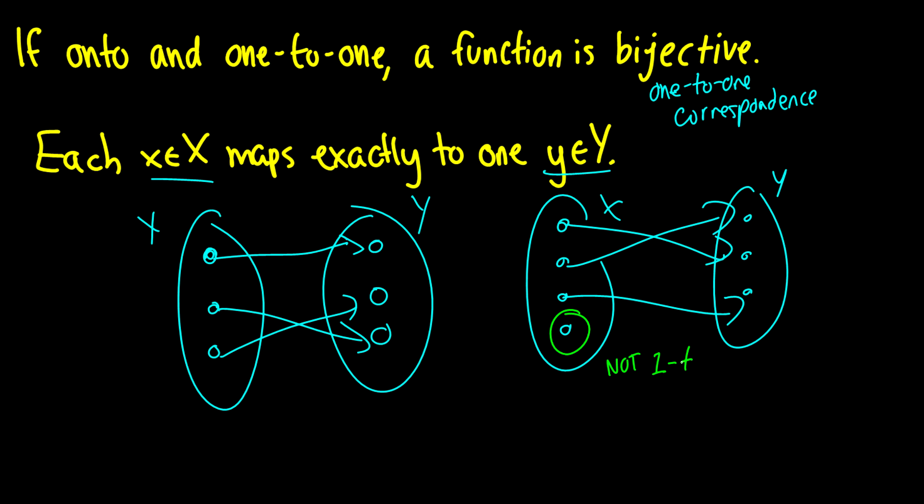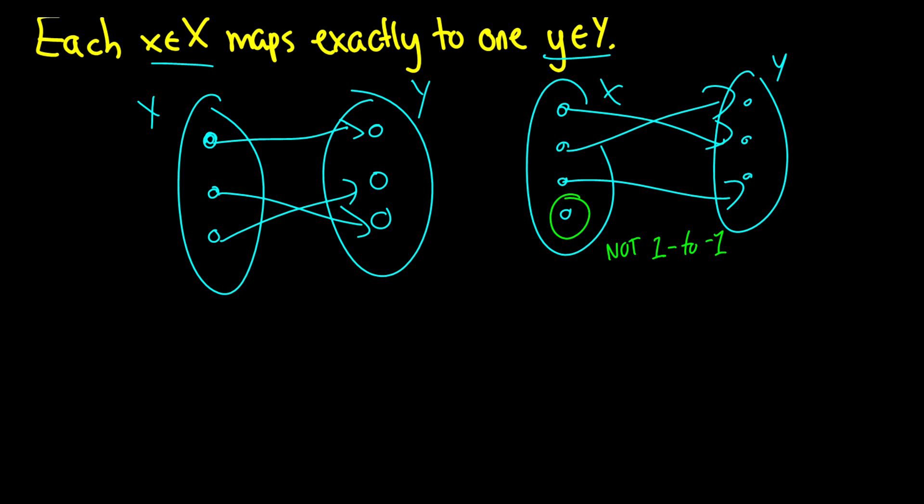What this means is, say we have four elements in x and only three elements in y, then we can't have a bijective relationship because we have this x that isn't being mapped to anything. And that breaks the one-to-one condition. So this is not one-to-one.